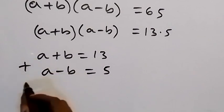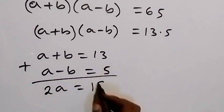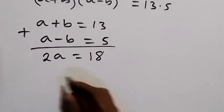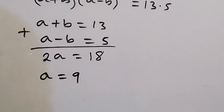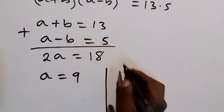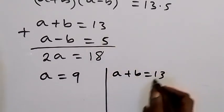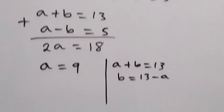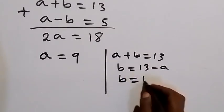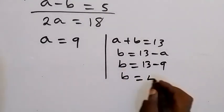Adding the two equations gives us 2a = 13 + 5 = 18. Dividing both sides by 2, a = 9. We can then find b using the first equation: a + b = 13, so b = 13 − a = 13 − 9 = 4.